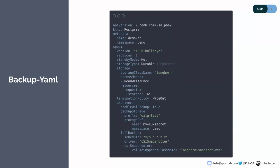After that, we need to mention the CSI snapshotter spec, where we need to provide the VolumeSnapshotClass name. This is important — we actually provide the driver name in the VolumeSnapshotClass. So we've mentioned the VolumeSnapshotClass name here. Before deploying this, we need to first look at the snapshotter class and the storage ref. We need to create the VolumeSnapshotClass and our storage secret credentials.